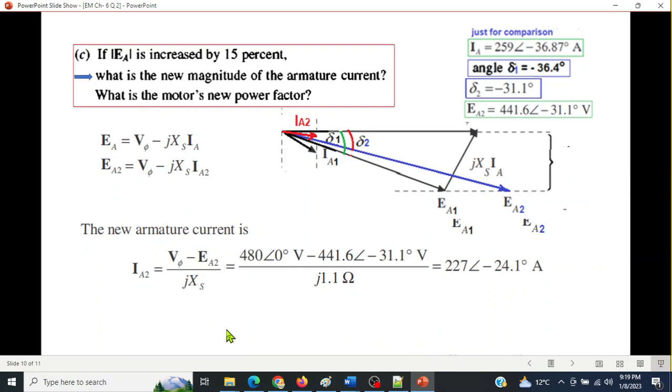And the power factor. The power factor is now easy to calculate, the new power factor with cos of the angle. The cos of minus 24.1. So it will be 0.913 lagging, because of the negative angle. So this was part C.